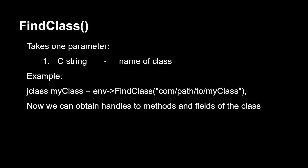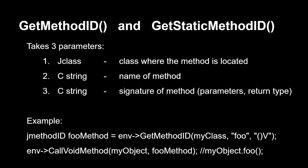FindClass takes a C string and returns a jclass if a class is found, which can then be used to get methods and fields. GetMethodID and GetStaticMethodID take two parameters: the Java class instance, the name of the method, and the signature. For example, 'foo' is the name of the method, and '()V' is the signature — it takes zero parameters and is a void function, that's why there's a V. Then CallVoidMethod takes the object and the method ID, which is the same as calling myObject.foo().